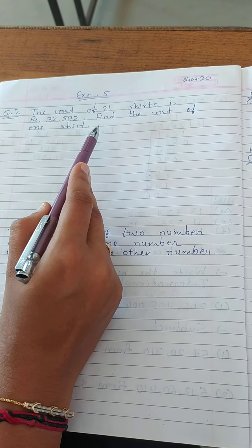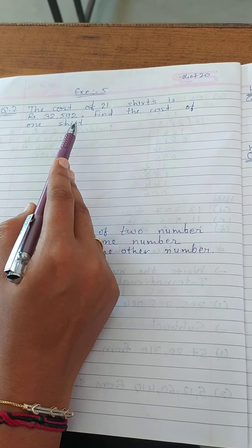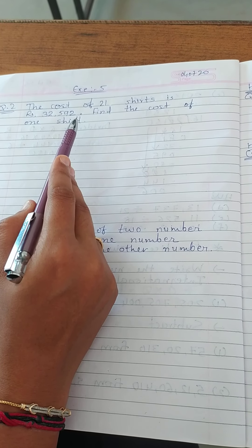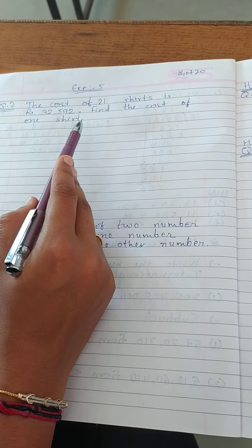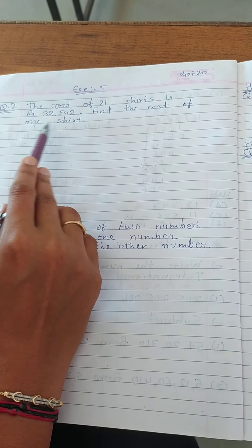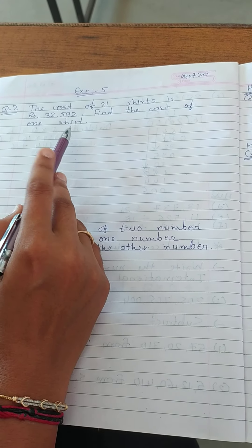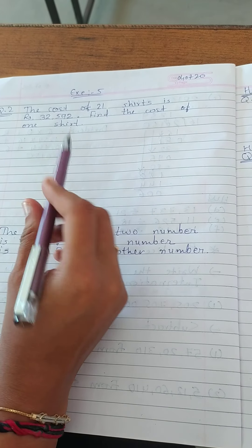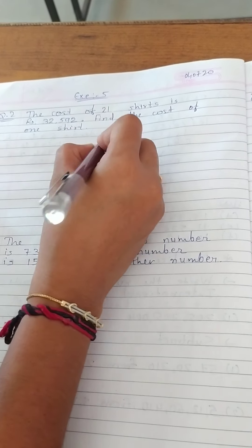So here we will do division. If we are asked to find the value of more shirts, more than 1 shirt, at that time we can multiply. But here we are asked to find 1 shirt, so here we do division. Let's do division.